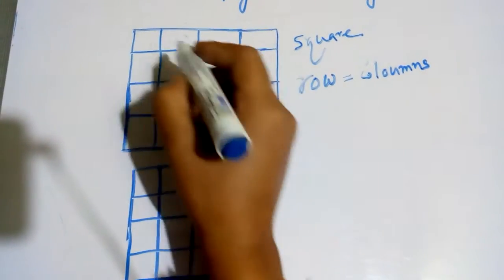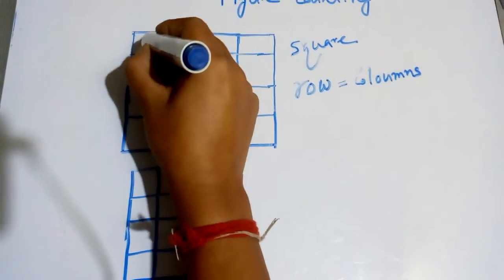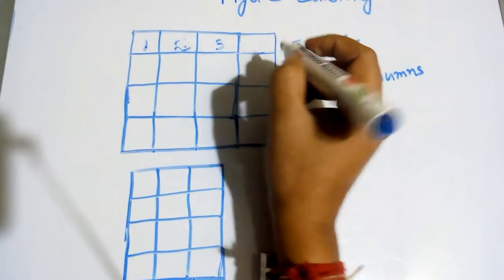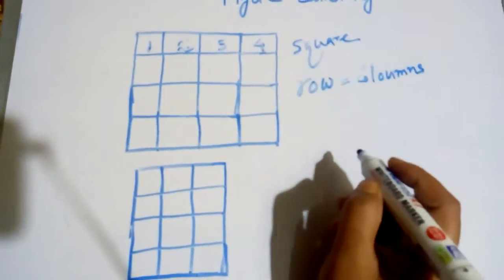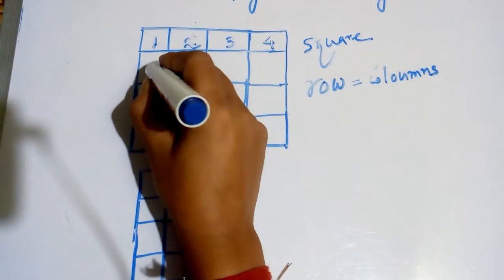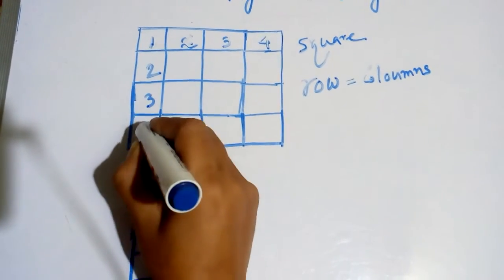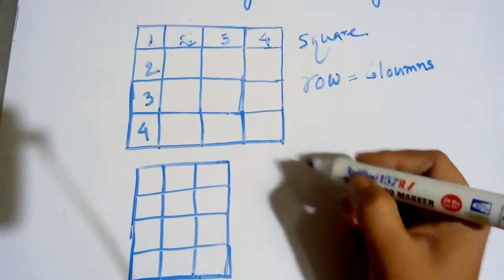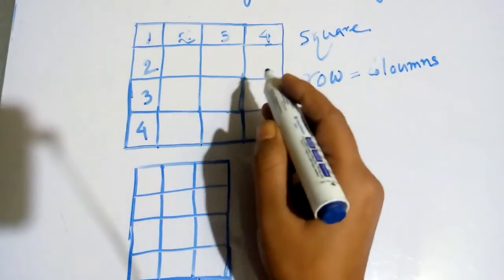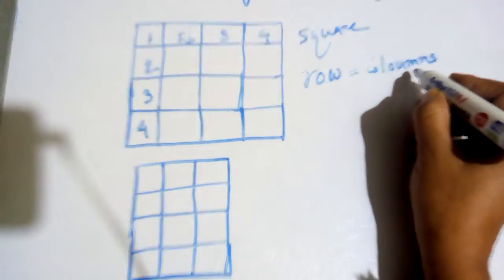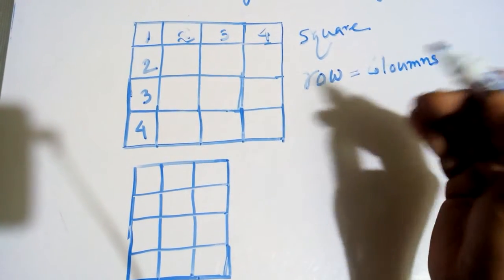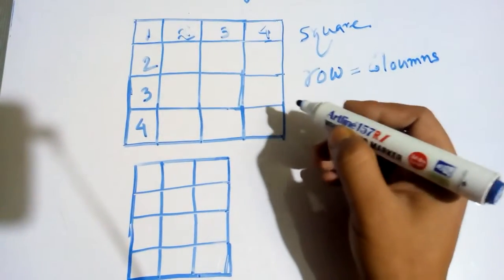We mark each square: this is one, this is two, this is three, and this one is four. Again, this one is one, two, three, and four. So what is the process to count the number of squares when the number of rows equals the number of columns?